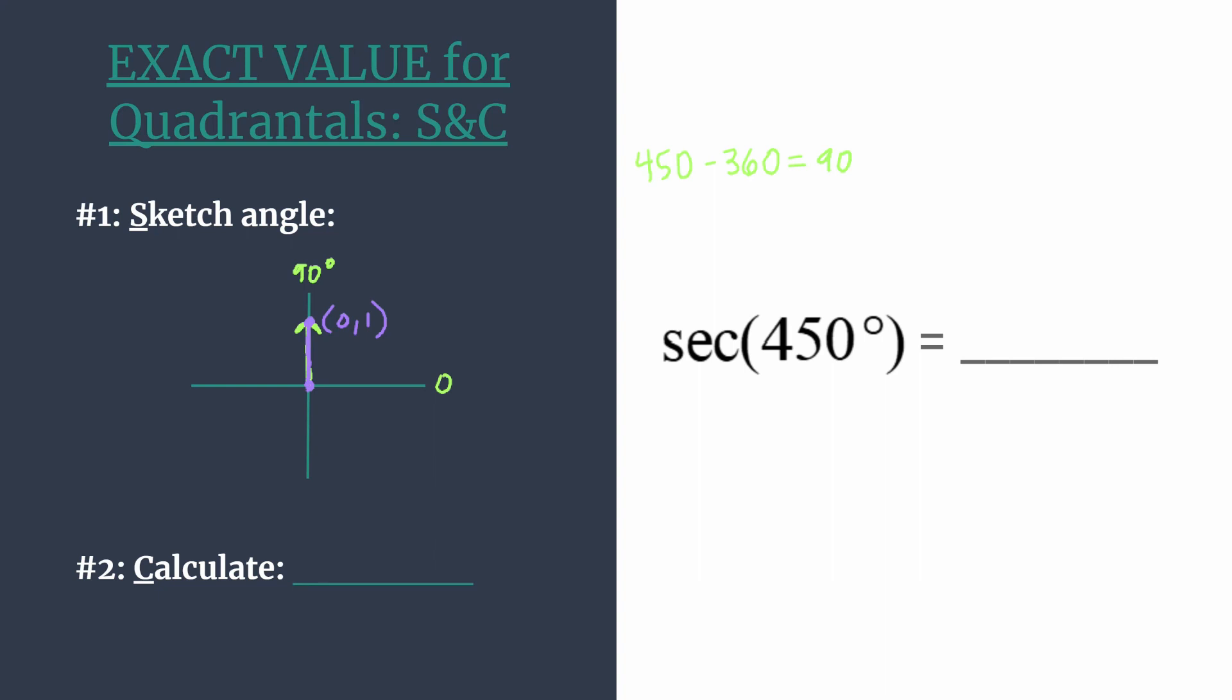Now that we have our coordinates, we're ready to calculate. Whenever you're finding the secant of an angle in the unit circle, we're going to calculate with one over x, because secant is just the reciprocal of cosine, the x. So we start our calculation: one divided by our x coordinate zero. Red flag - we know that can't happen, you cannot divide by zero. So we're going to say our result must be undefined. The secant of 450 degrees is undefined.